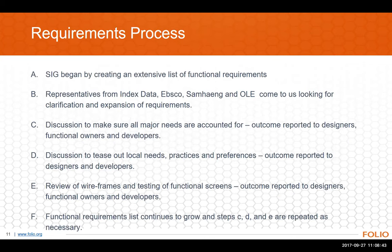We began very long ago by working on an extensive list of functional requirements — what is it that we need to do our job, and what is it in our current system that works or doesn't work? We worked with the folks from Index Data, EBSCO, Samhang, and OLE when they needed a clarification of what we were trying to say. We wanted to include as many voices as possible to make sure that we didn't miss anything. From there, the discussion got more granular, focusing on a particular need such as a request form or creating manual fines and fees. We'll then review the wireframes and functional screens — communication coming from the SIGs back to the developers, functional owners, and designers — and then we wash, rinse, and repeat as many times as we need to get our final desired outcome.